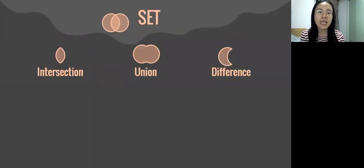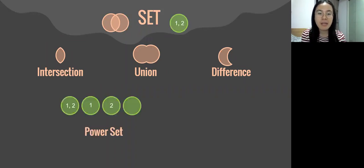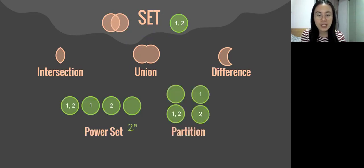Sets have operations including intersection, union, difference, and Cartesian product. The power set is basically the set of all possible subsets, and therefore it has an order of 2^n, where n is the order of the original set. The notion of partition is given.